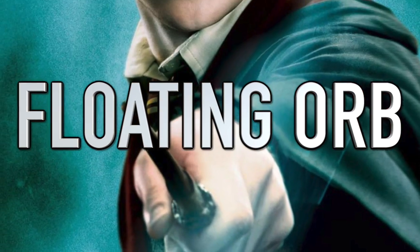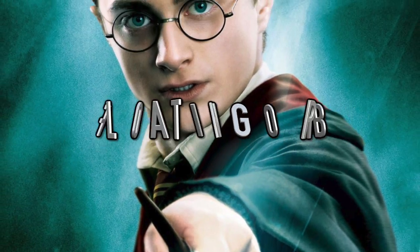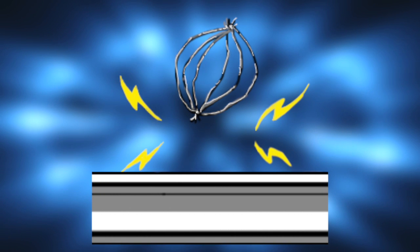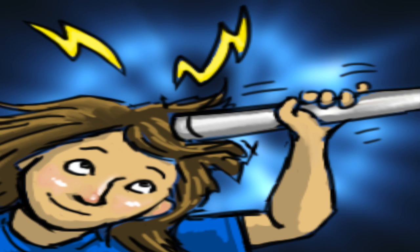Next up we have floating orb. Have you ever wanted to be a wizard? Well, sorry, I can't do that for you, but this is pretty close. For this one you need a 24-inch PVC pipe and six strands of mylar tinsel. Tie the tinsel to one end, then go down about six inches and tie the tinsel again. Cut off the rest of the tinsel.